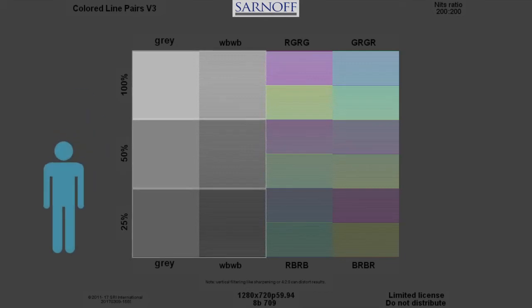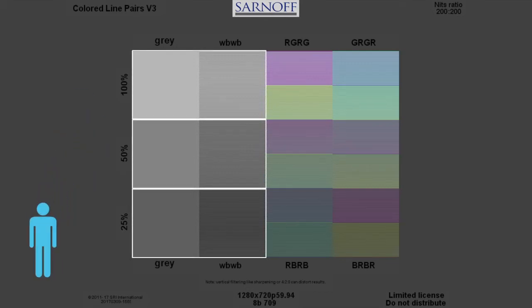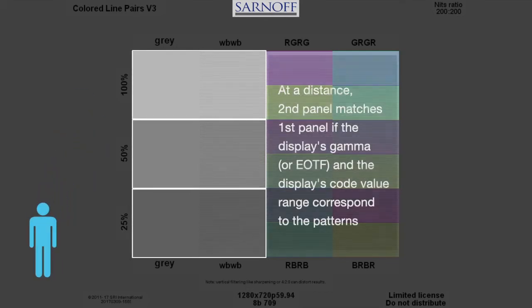Viewed from a distance, these line pairs will merge optically and should match the first panel if the display's gamma or EOTF and the display's code value range correspond to the pattern.